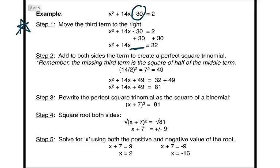Our second step is to add to both sides the term needed to create a perfect square trinomial on the left. Remember, the missing third term is the square of half of the middle term. The middle term is 14, you cut it in half, then you square it, and 7 squared is 49. So I add 49 to both sides of my equation.